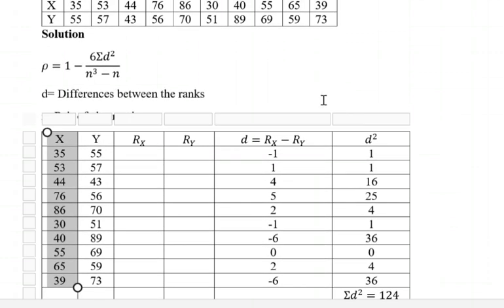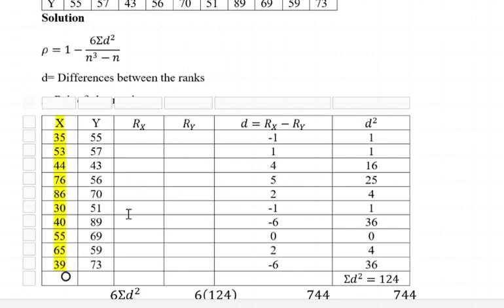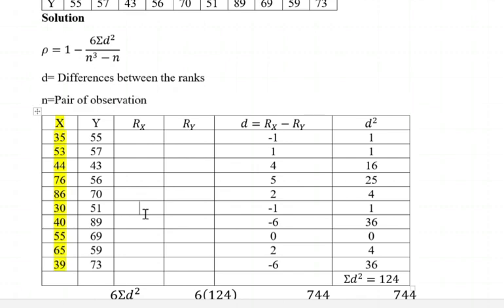So after we have identified the formula to use, the first step is to rank the values of x, and when we finish that, we rank the values of y. You can decide to rank them either from the least to the highest or from the highest to the least, but whatever yardstick you use for ranking column x is the same yardstick you use to rank column y. So if we decide to rank column x from the least to the greatest, the value 30 will be given rank 1, then rank 2 will be given to 35.